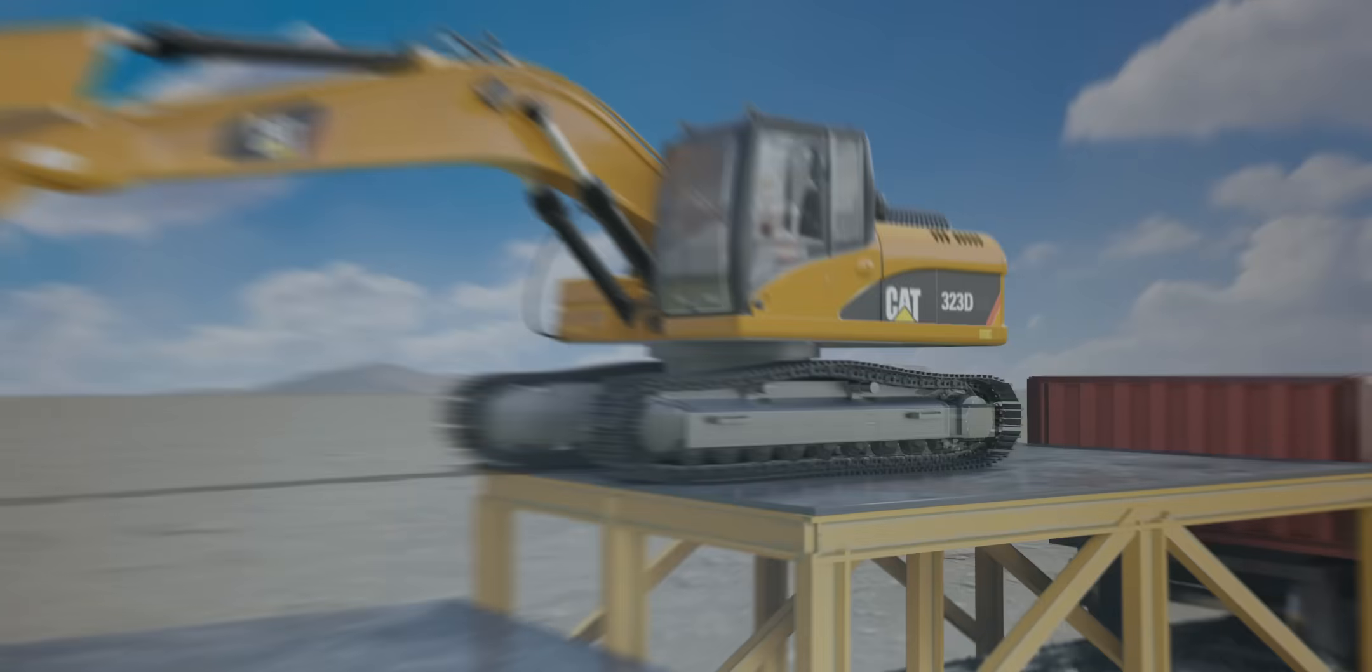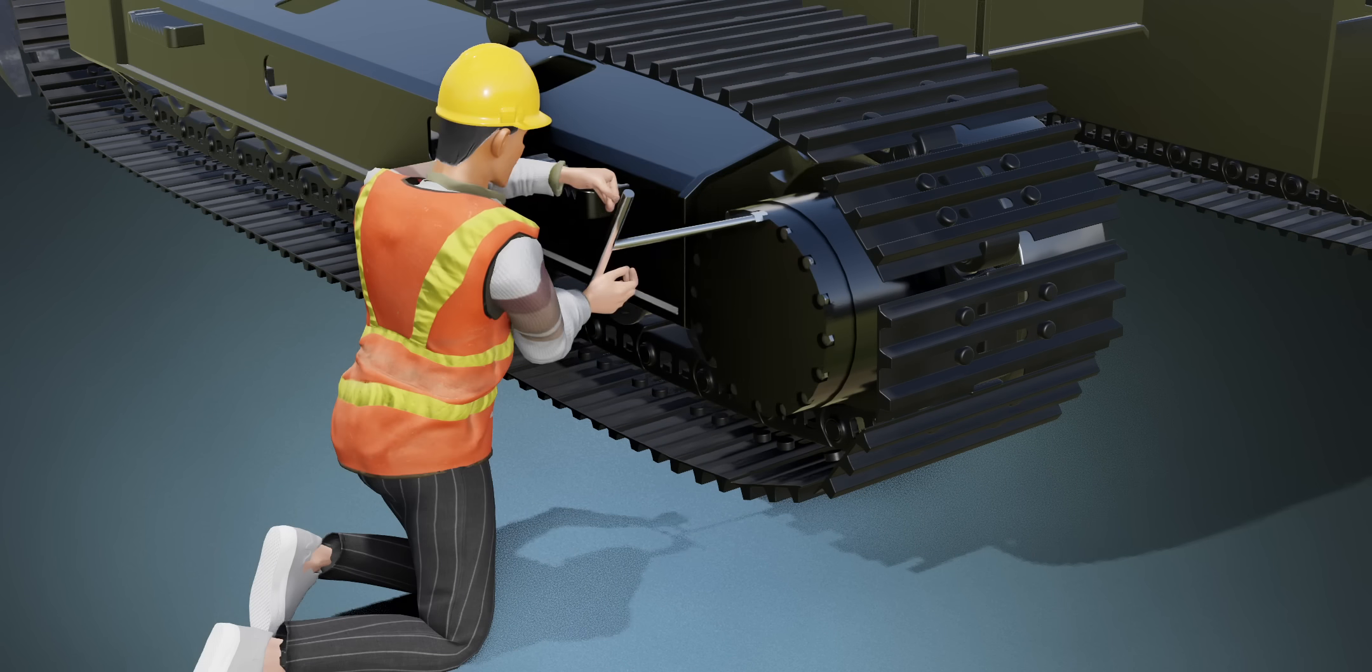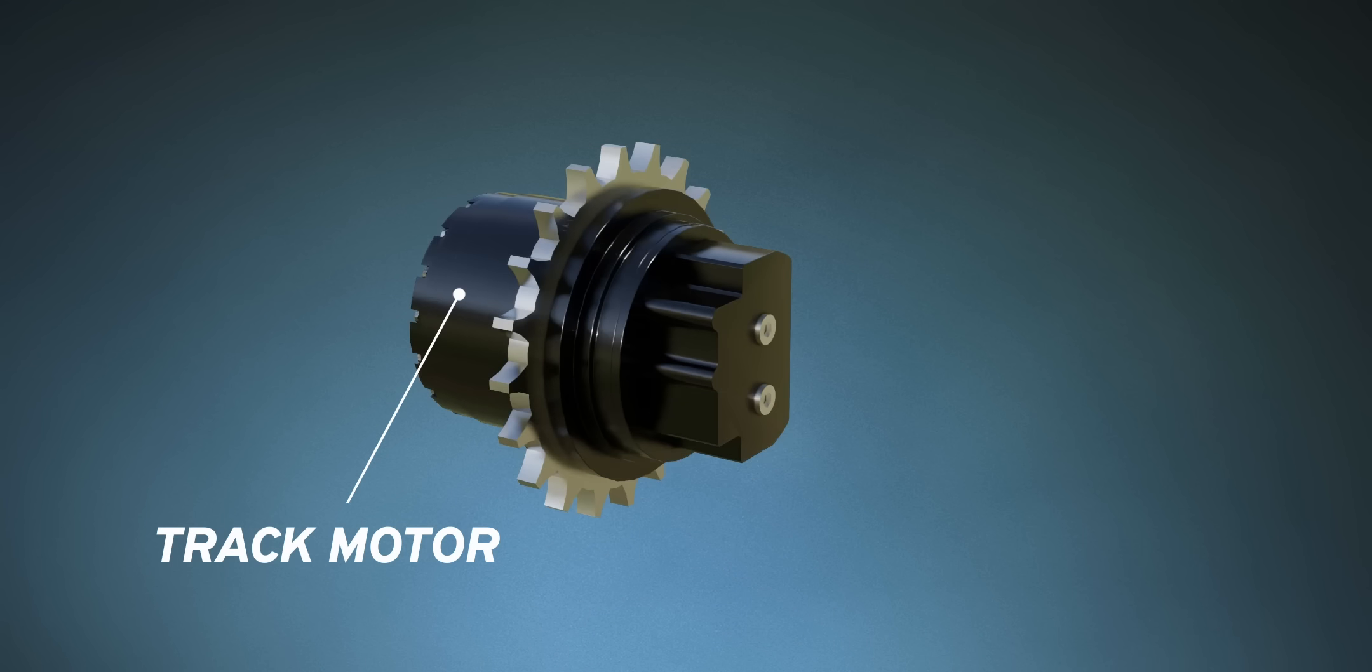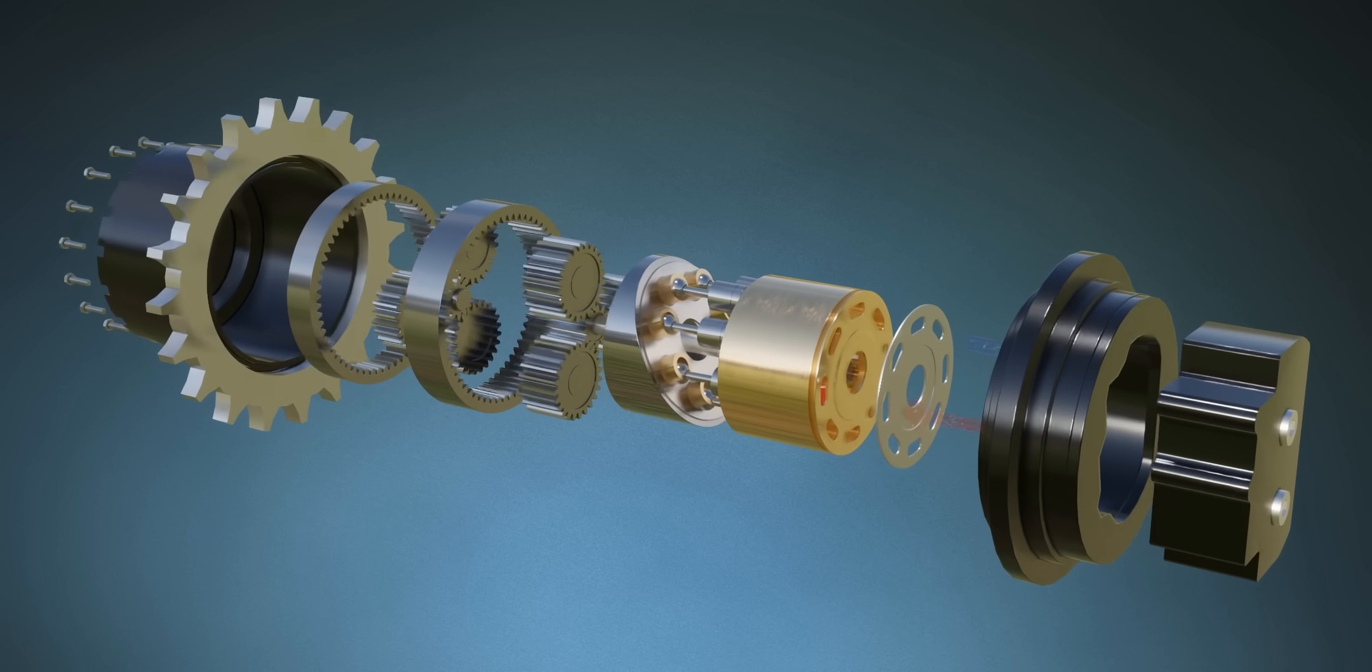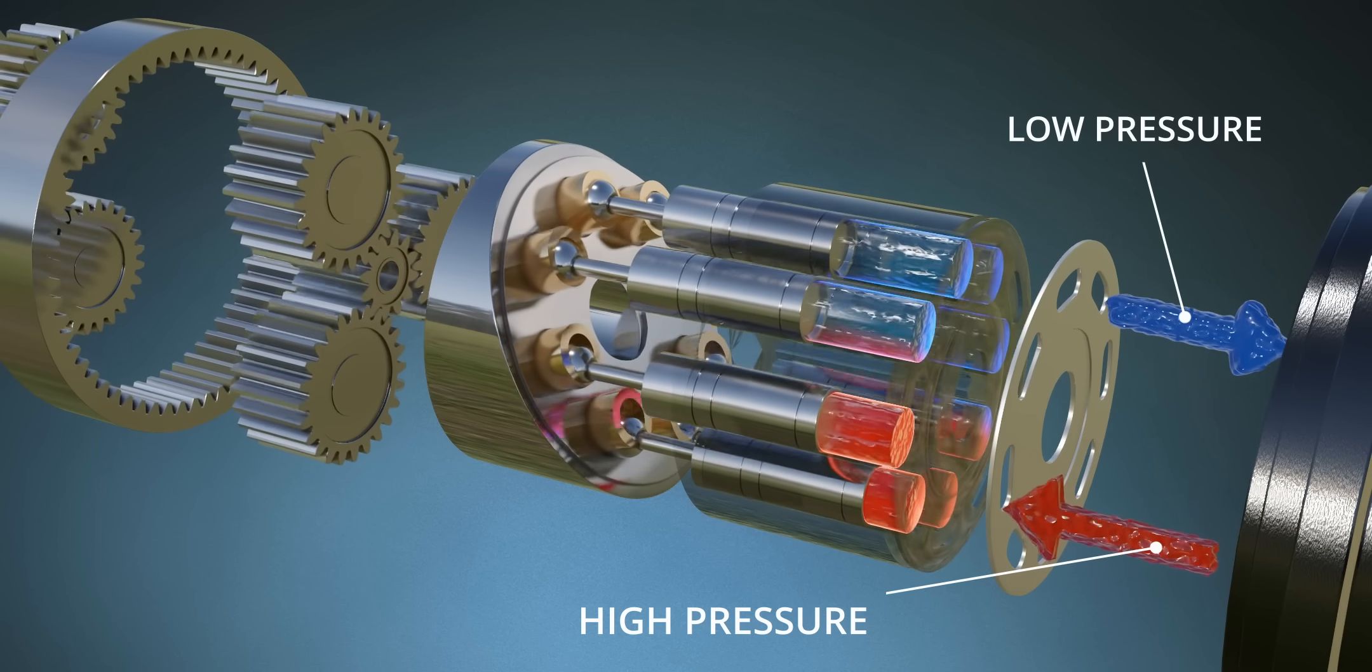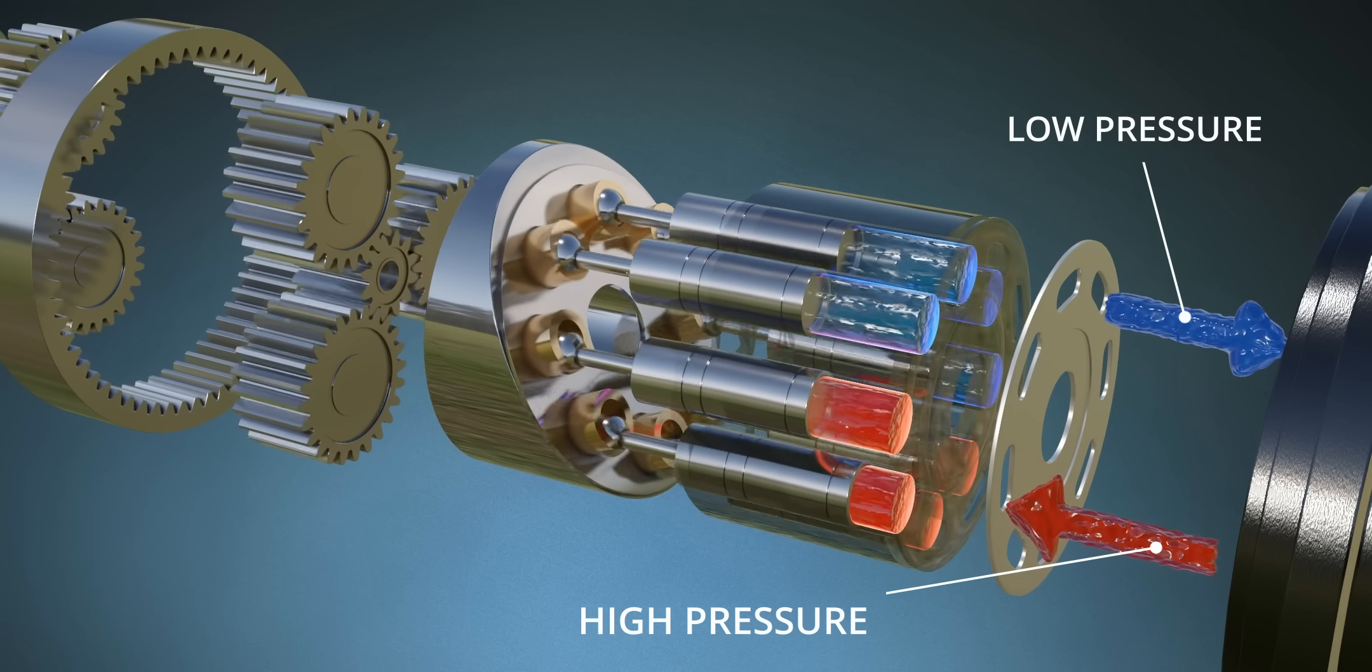Have you ever been curious about what is inside this track geometry? If you remove this cover, you will come across this beautiful and crucial engineering device, a hydraulic motor. The hydraulic motor runs a sprocket, which runs the track. Interestingly, this motor does not run on electricity, but on high-pressure fluid.